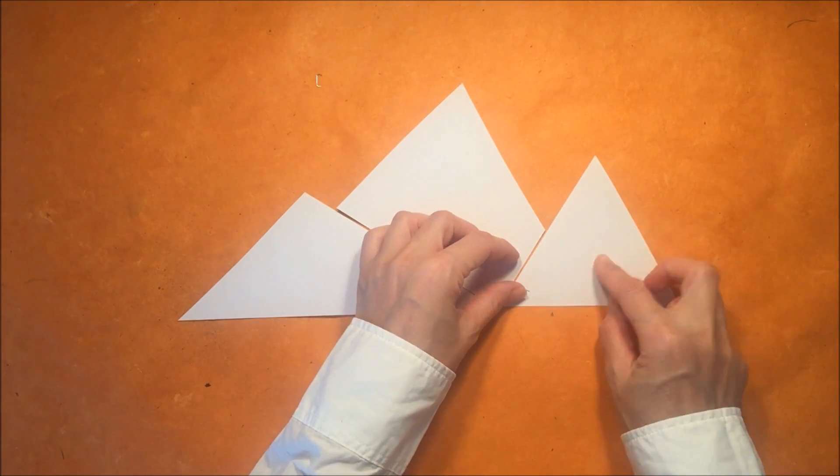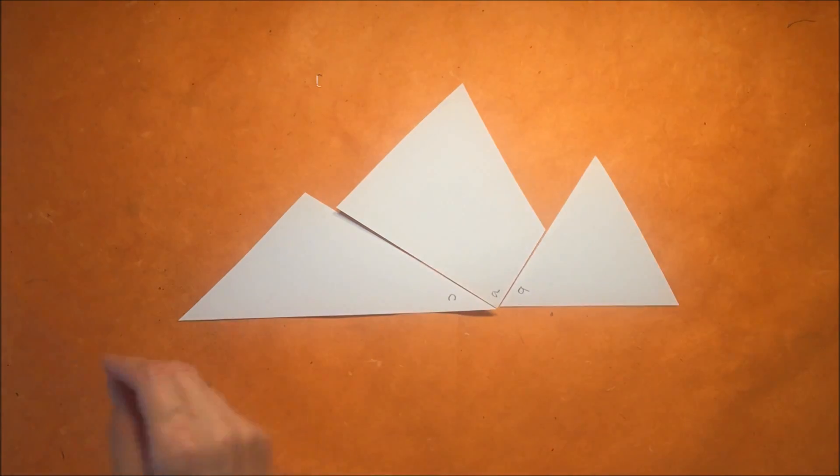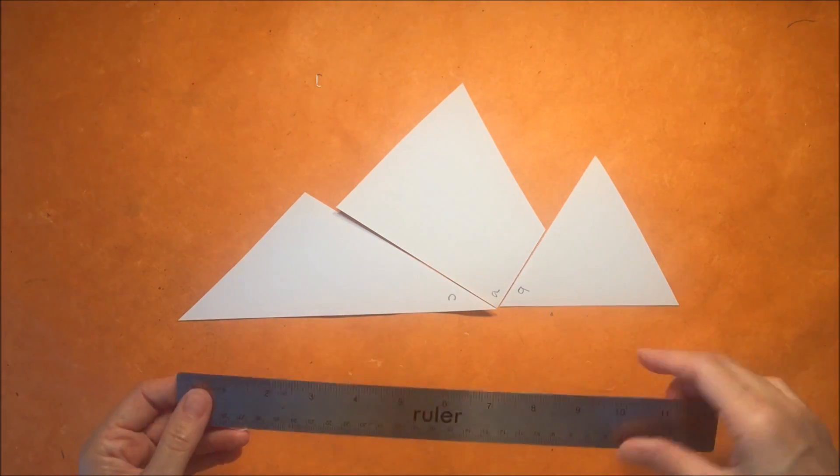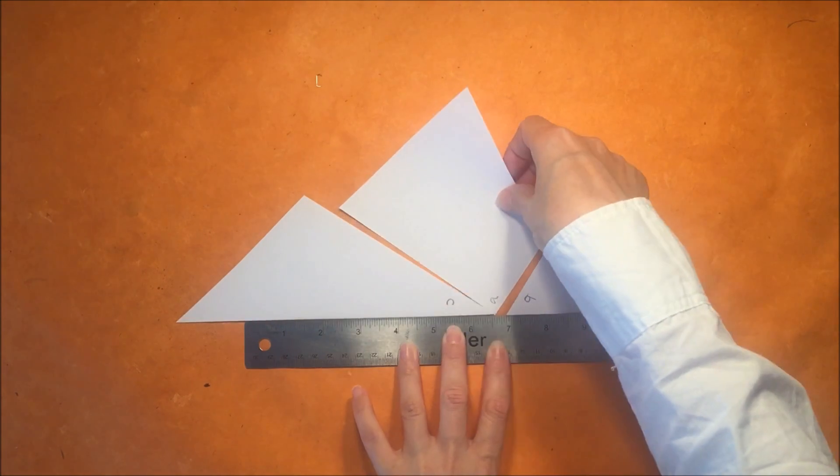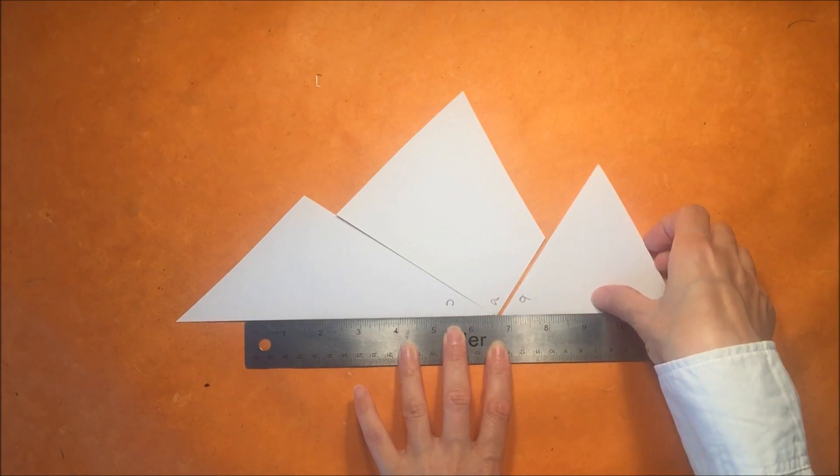You will have to have a lesson prior to this where you are showing that a straight line is 180 degrees and that a full circle makes 360 degrees.